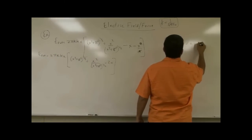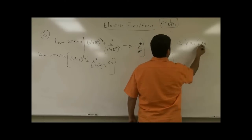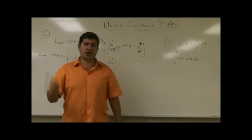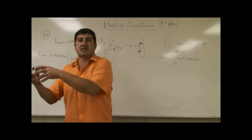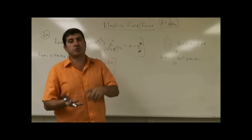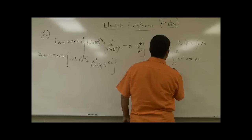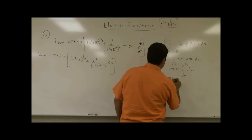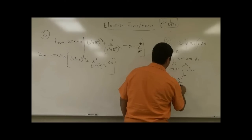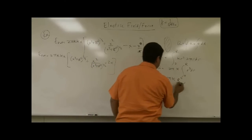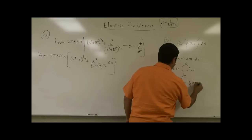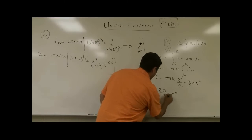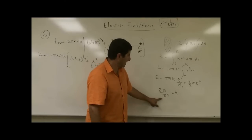Every time you have non-uniform charge density, you need to relate the constant kappa to the total charge Q. Q equals the integral of sigma dA, which equals the integral of kappa r squared times 2 pi r dr from 0 to R. This gives Q equals 2 pi kappa times R to the fourth over 4, which simplifies to pi over 2 times kappa R to the fourth. Therefore kappa equals 2Q over pi R to the fourth.